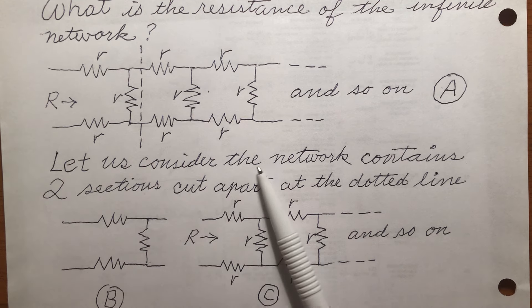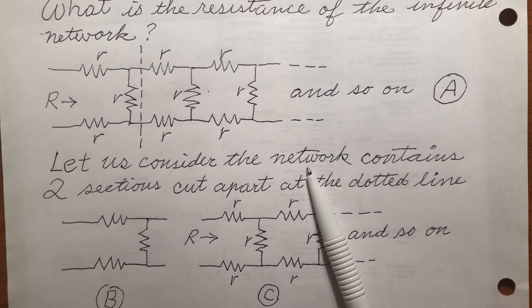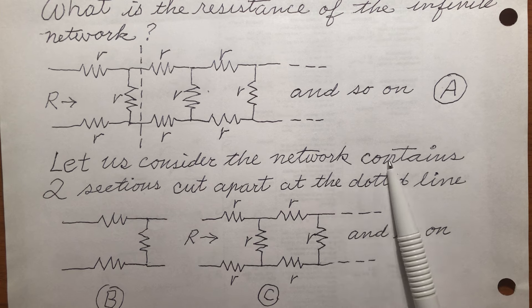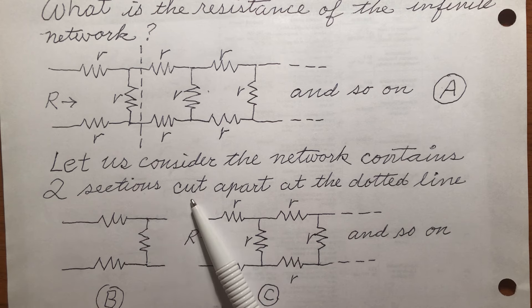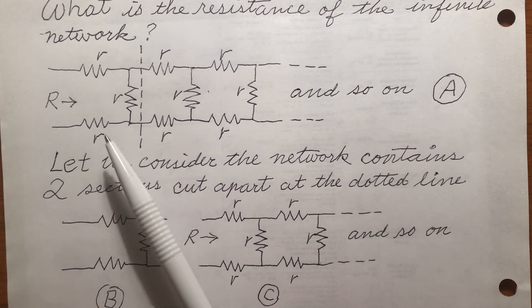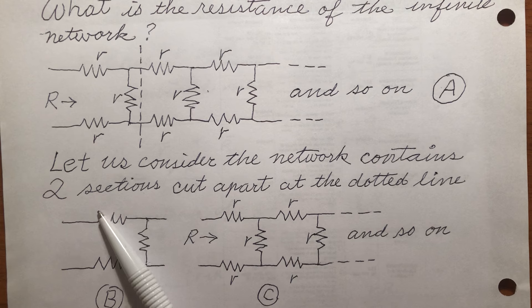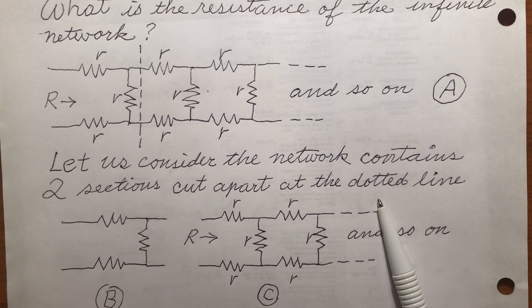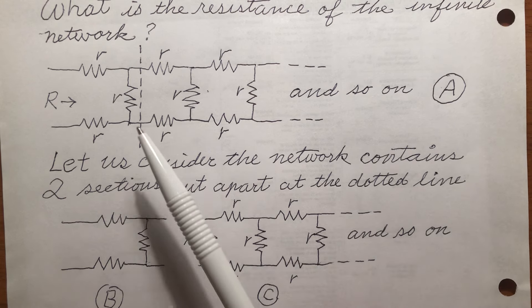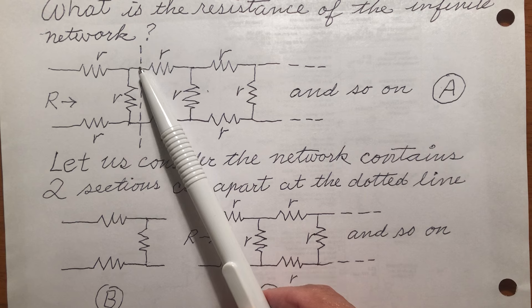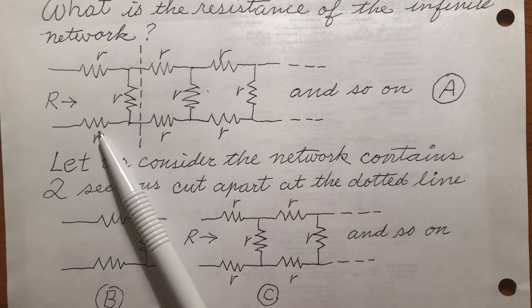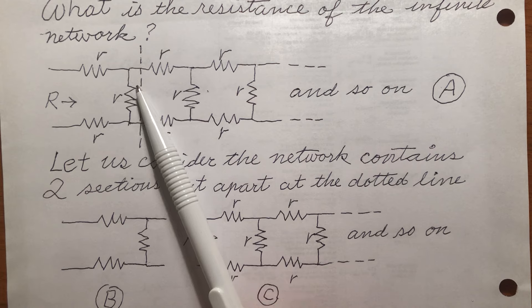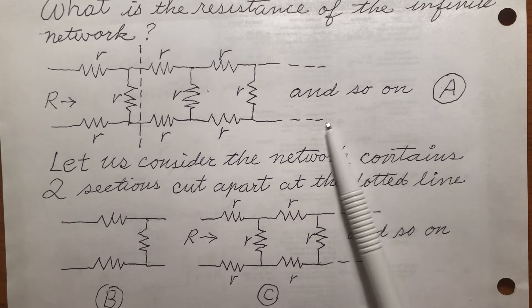Let's consider the network contains two sections. We cut apart the long network into two sections. Where do we cut? We cut along this dotted line. So I have two sections. One section is this one. The other section is this one.